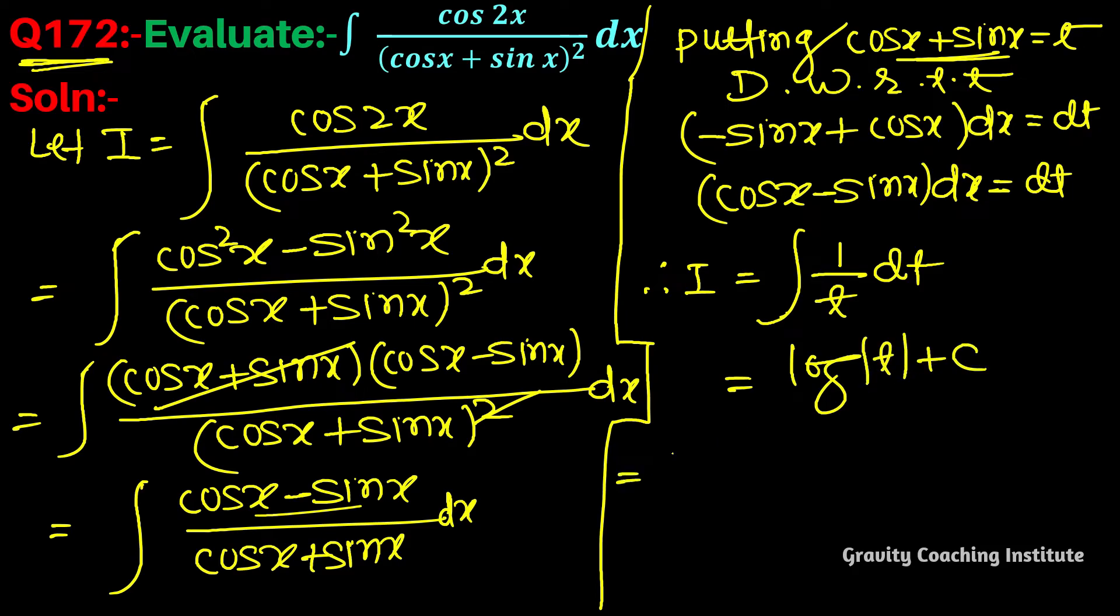So this equals log of the absolute value of t. Putting the value of t, we get log of (cos x plus sin x) plus c.